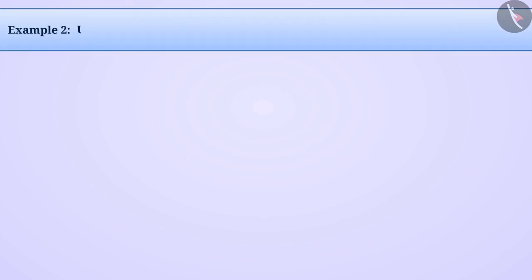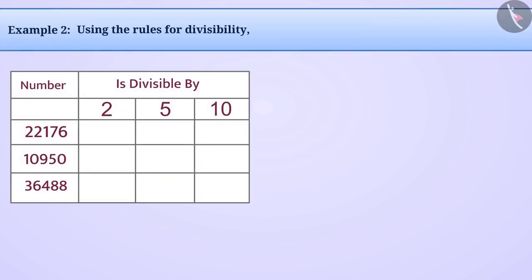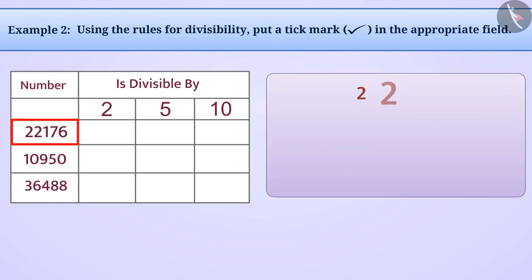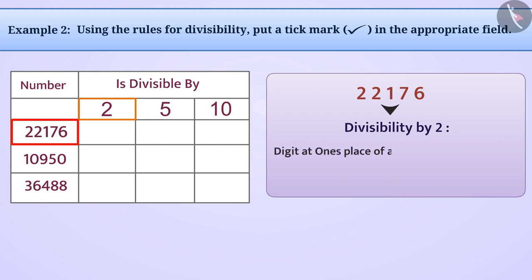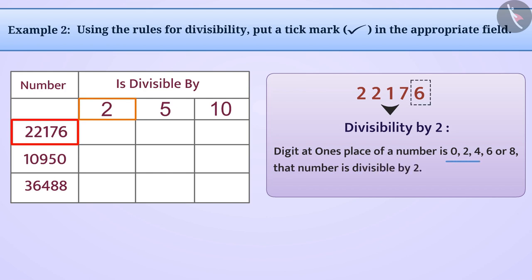Next example: using the rules for divisibility, put a tick mark in the appropriate field. Let's look at the number 22,176. For divisibility by 2, the rule tells us that if the digit at the ones place is 0, 2, 4, 6, or 8, then the number is divisible by 2. Since the ones digit of 22,176 is 6, this number is divisible by 2.